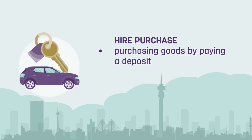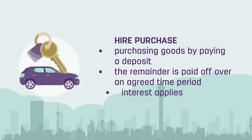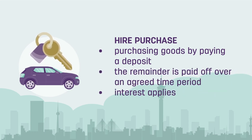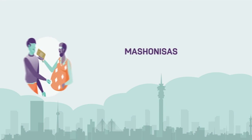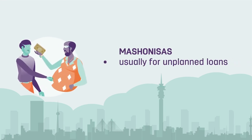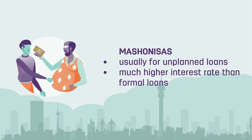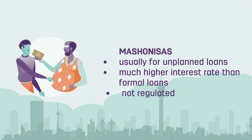There's also the hire purchase option. This is when you pay a deposit to purchase an item and repay the remainder over an agreed time period, including interest. Mashonisas, or informal lenders, are usually chosen when you have unplanned loans. They charge much higher interest rates than formal loans.